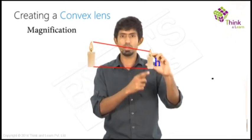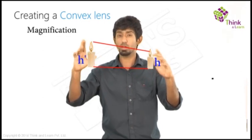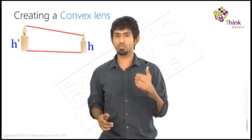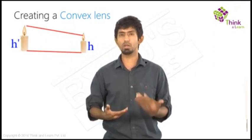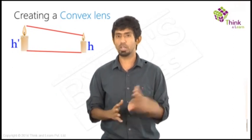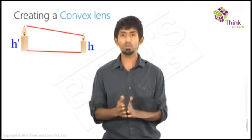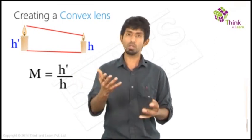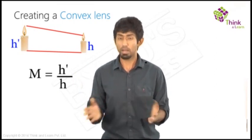So what is this? H or the object size. And what is that? H dash or the image size. These two seem very familiar, right? Because both in our derivations of mirror formula and lens formula, we kept playing with this quantity, H dash by H or H by H dash. So what do we do now? We define that as magnification. So it's not a new quantity, but it's a new name to a quantity you already know. Magnification.